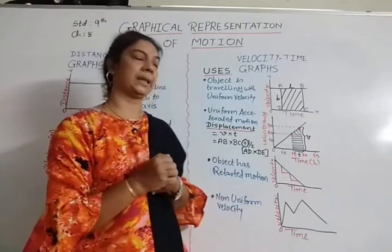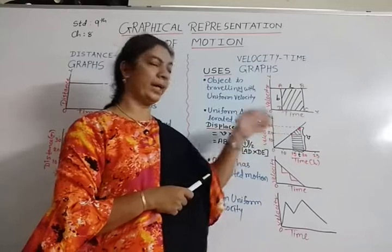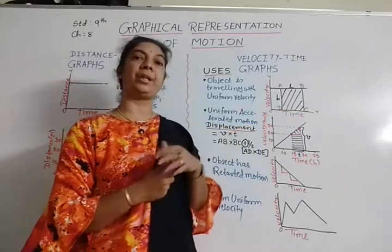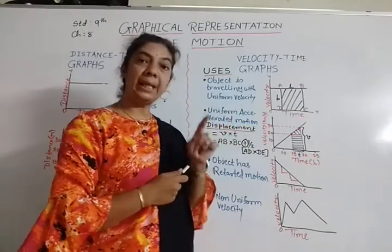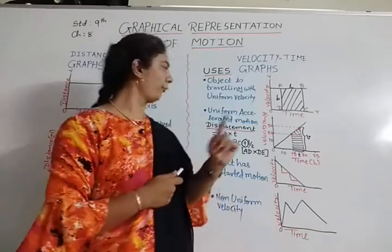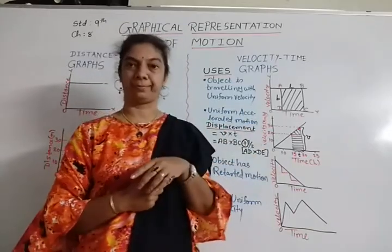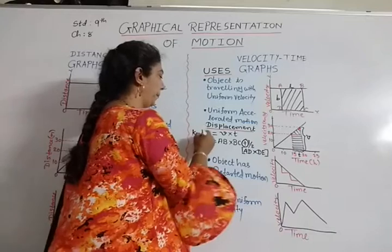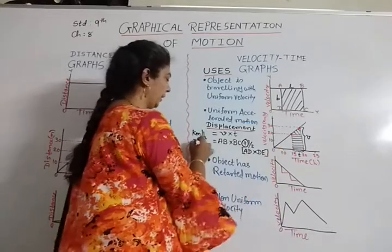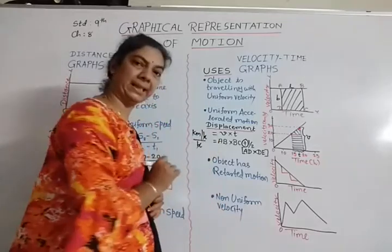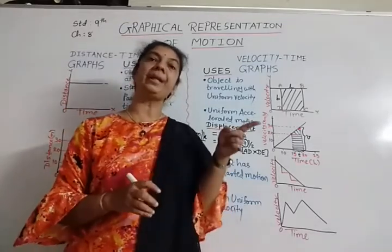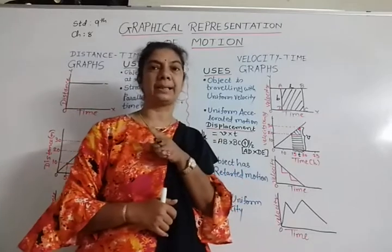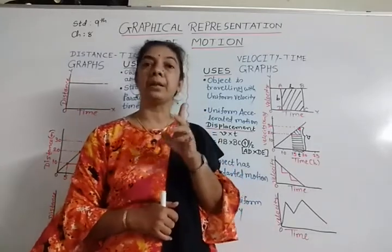This is also asked in exams: name the quantity that can be found from the area enclosed under a velocity-time graph, or give its unit. The unit of velocity is km/h and the time unit is hours; hours cancel, leaving kilometers — or in SI units, meters. So the quantity found from the area under a velocity-time graph is displacement, with unit kilometer or meter.